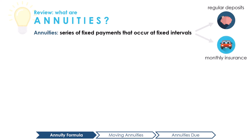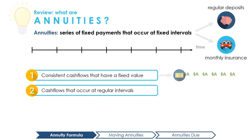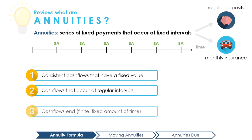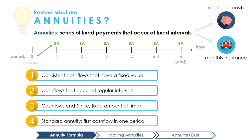Annuities all display certain characteristics. They have consistent cash flows that have a fixed value, cash flows that occur at regular intervals, cash flows that occur for a fixed amount of time, i.e., the cash flow ends, and for a standard annuity, the cash flows start one period from now.